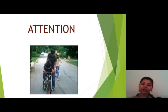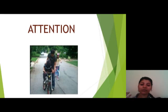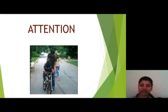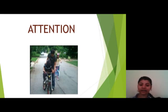First is attention. In order to learn, observers must attend to the modeled behavior. Experimental studies have found that awareness of what is being learned and the mechanisms of reinforcement greatly boost learning outcomes. Attention is impacted by characteristics of the observer — such as perceptual abilities, cognitive abilities, arousal, and past performance — as well as characteristics of the behavior or event, such as real events, novelty, affective balance, and functional values.